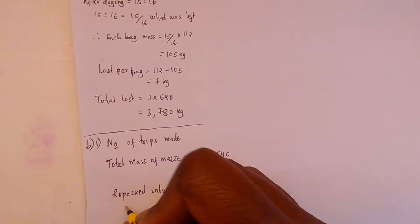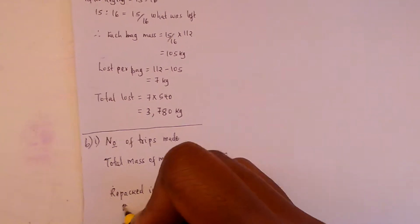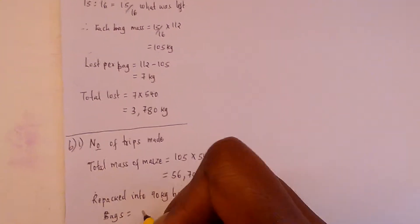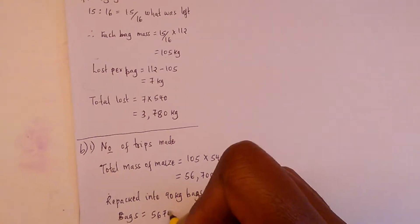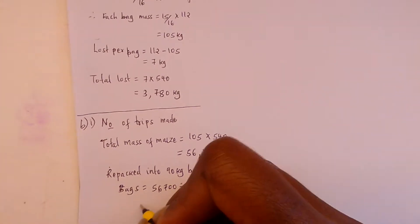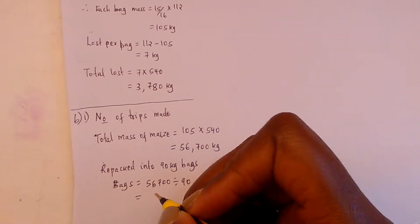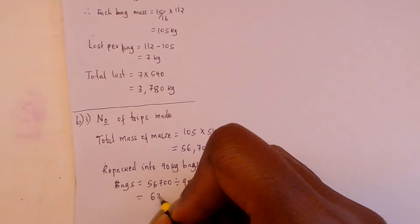So the total bags will be 56,700 ÷ 90, which gives us 630 bags.